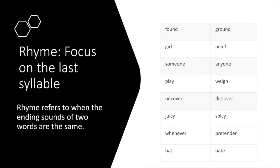Let's talk about rhyme. Rhyme is also repeated sounds, but instead of the beginning, we're looking at the end of the word — the last syllable. When the ending sounds of two words are the same, they rhyme.